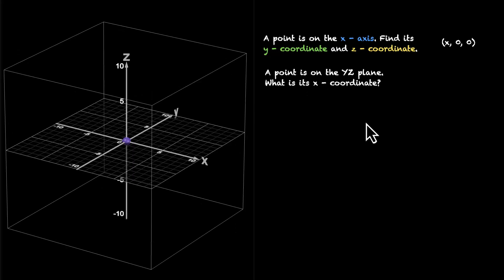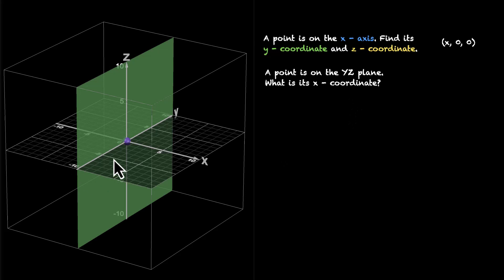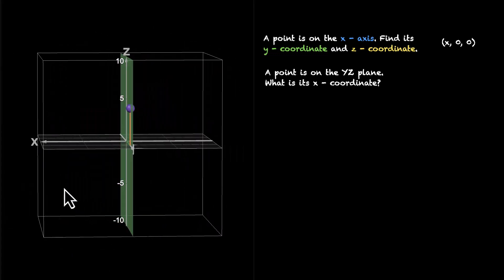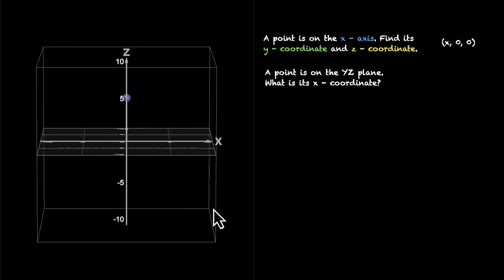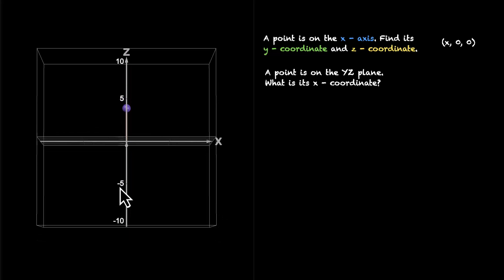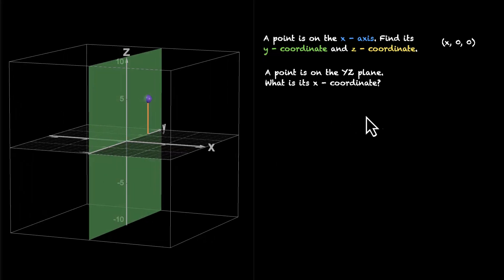Here's the next one: a point is on the YZ plane — what is its X coordinate? So this is our YZ plane. Imagine a point on this plane — we move along the Y axis and then along the Z axis, and we are on the YZ plane. Any point on this plane will have no coordinate along the X axis; there is no movement along the X axis. We only have movement along Y and Z. This means the coordinate will look like (0, Y, Z) — which means the X coordinate is 0.